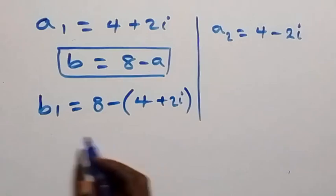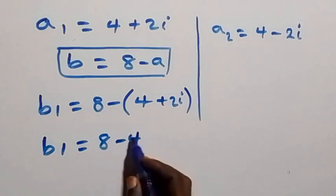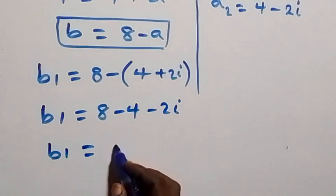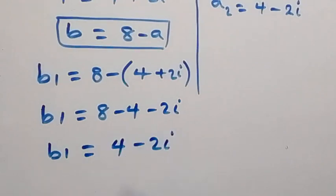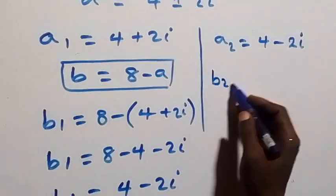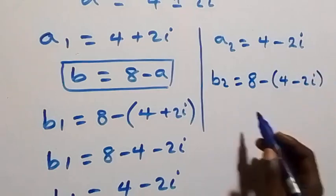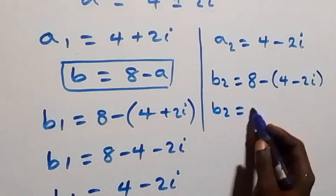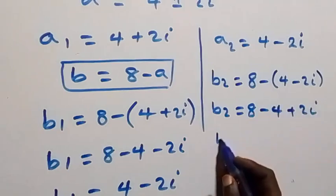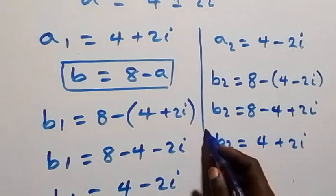Opening the bracket: b1 equals to 8 minus 4 minus 2i, which gives b1 equals to 4 minus 2i. Also using the same relation, b2 equals to 8 minus a2, which is 8 minus (4 minus 2i), giving b2 equals to 4 plus 2i.